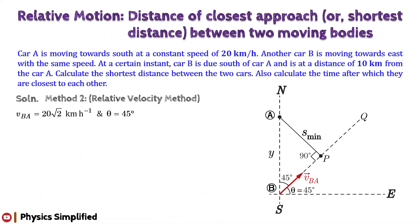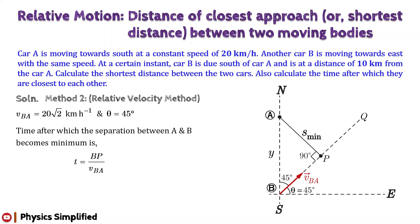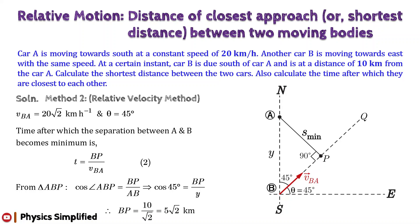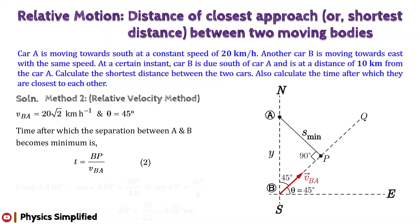Now we will calculate the time after which the two cars will be closest to each other. It can be obtained from the equation: t = BP / v_BA (equation 2). For the right angle triangle ABP, BP is the base. Therefore, cos(∠ABP) = BP / AB. Substituting the corresponding values and simplifying, we get BP = 5√2 km. Substituting the values of BP and v_BA in equation 2, we obtain after simplification t = 15 minutes.